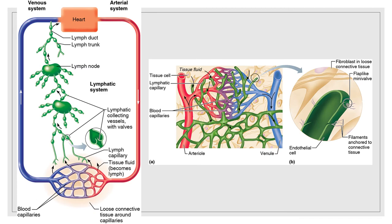As blood circulates through the body, nutrients, waste, and gases are exchanged between the blood and interstitial fluid. That fluid remaining in the tissue spaces — up to as much as three liters a day — becomes part of the interstitial fluid. This excess tissue fluid, as well as plasma proteins that escape from the blood, must be carried back to the cardiovascular circulation so that blood volume is sufficient to maintain appropriate cardiac output and blood pressure.